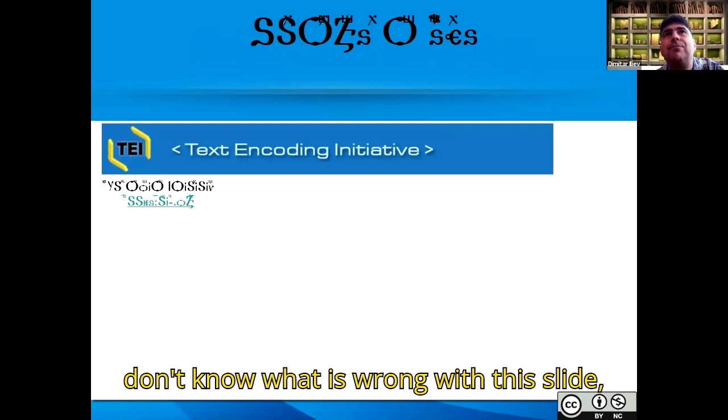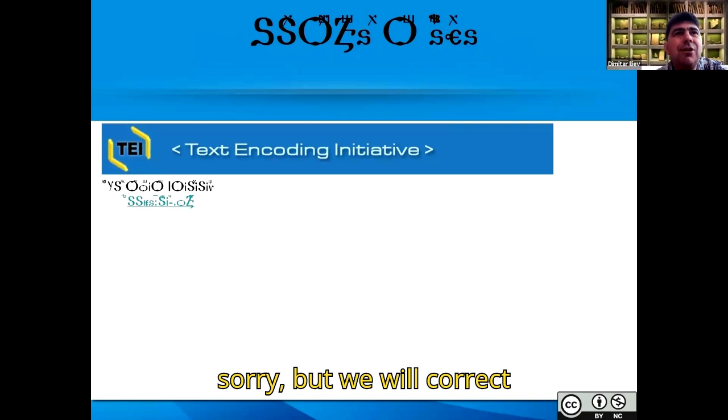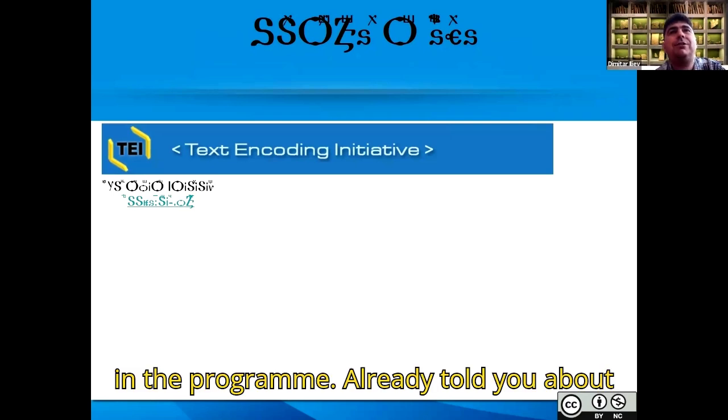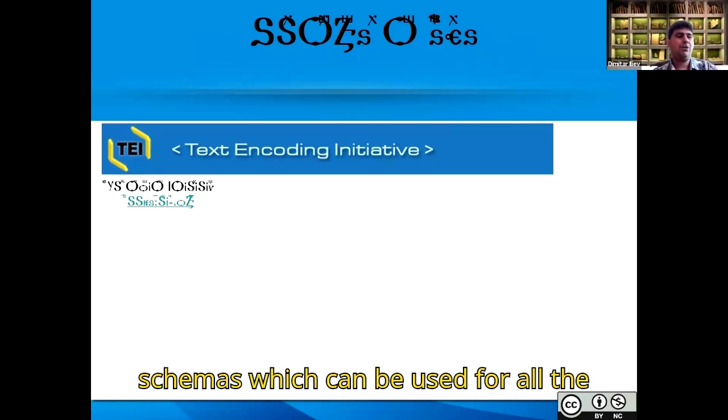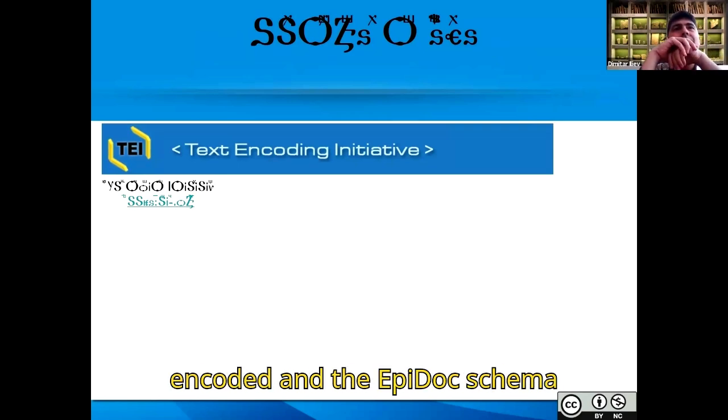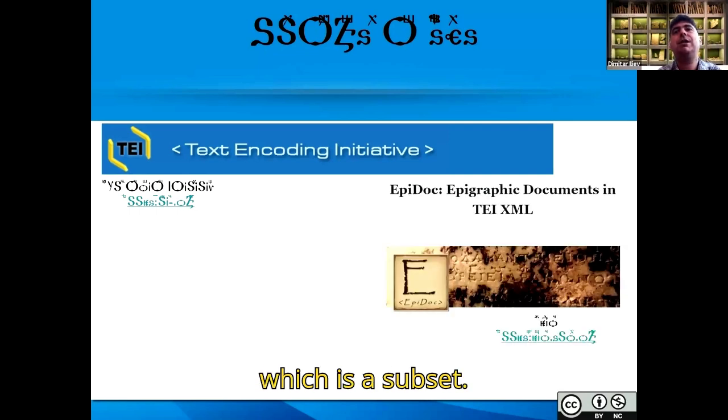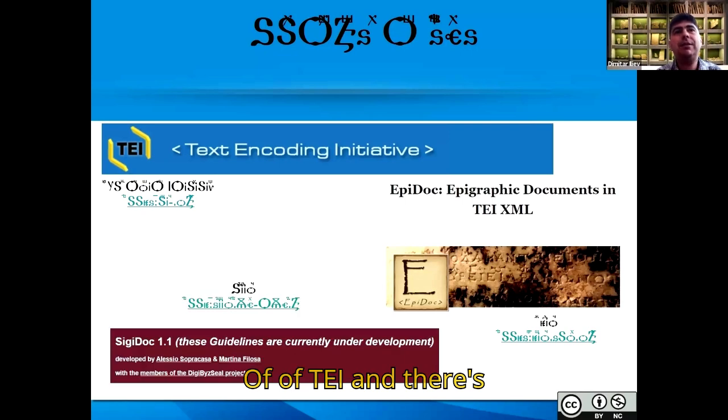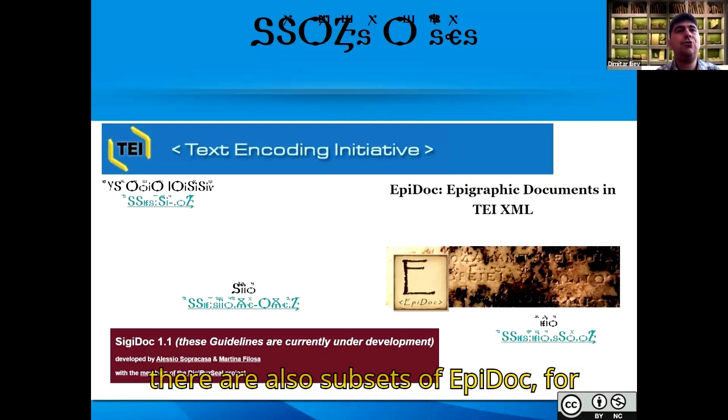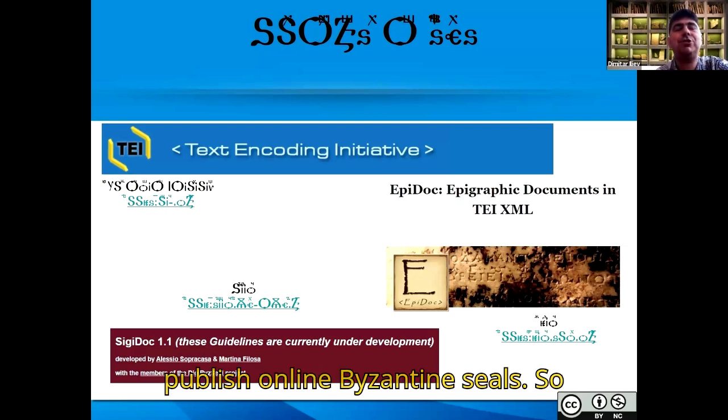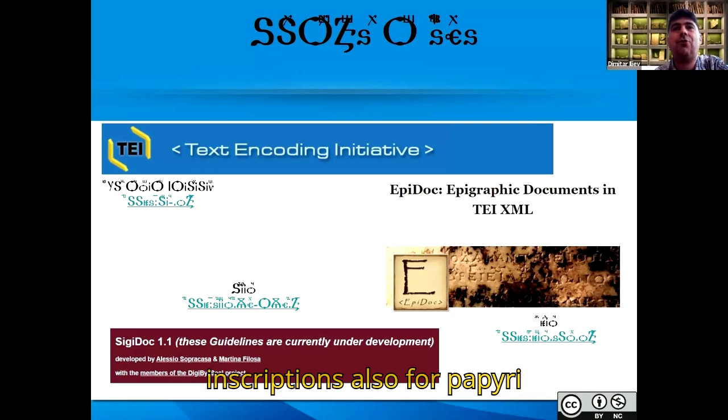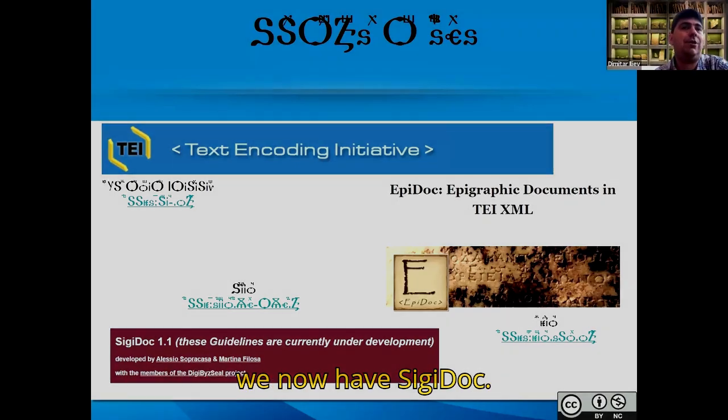My colleague Dragana Nikolic also, I don't know what is wrong with this light. Sorry, but we will correct this when we link to it. In the program, I already told you about the Text Encoding Initiative, which produces schemas which can be used for all the humanities data that can be encoded. And the Epidoc schema, which is a subset of TEI. And there's also, to this day, there are also subsets of Epidoc. For example, SigiDoc, which is used to describe and publish online Byzantine lead seals. So Epidoc can be used apart from inscriptions, also for papyri and other text bearing objects, for which we now have SigiDoc.